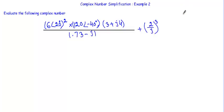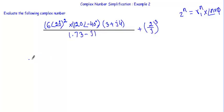When we have a complex number z raised to the exponent n, we simply take the magnitude to the power n and multiply the phase angle by n. Here we have 6 phase angle 20 degrees, so to find its square we take 6 squared and multiply 20 degrees by 2. Since we need to perform multiplication, all complex numbers should be in polar form.